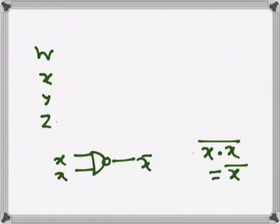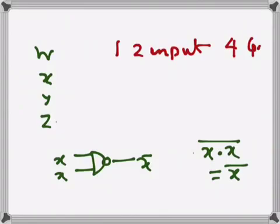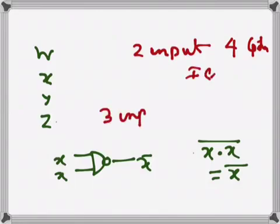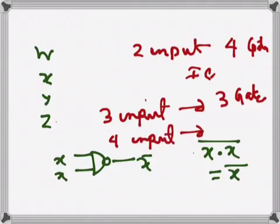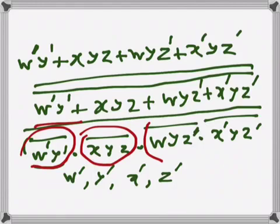In terms of ICs: a two-input NAND IC has four gates, and a three-input NAND IC has three gates, and a four-input NAND IC has two gates. The number of gates we need for the inversions is four, because there are four complement terms — and since Z' appears twice we only need to implement it once, so four two-input NAND gates is enough.